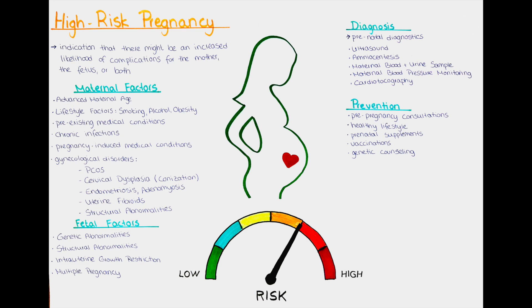Also, a change of currently used medications may be advised in some cases. A healthy lifestyle is recommended before and during pregnancy. This can include the avoidance of smoking and alcohol consumption, a diet rich in fruits and vegetables, whole grains and lean proteins, or the implementation of exercises that are also suitable for pregnancy.